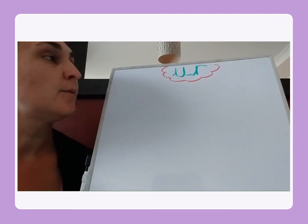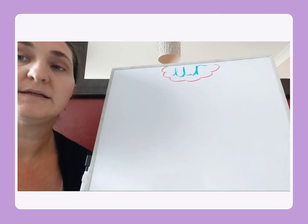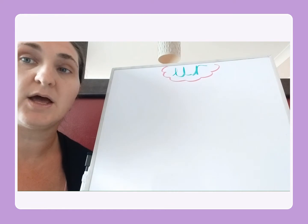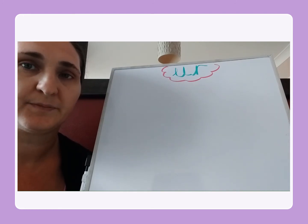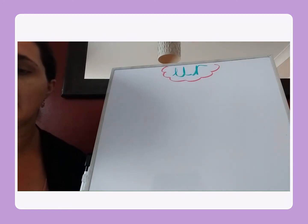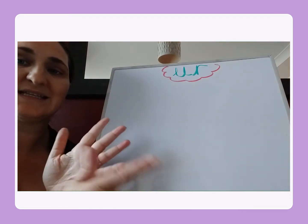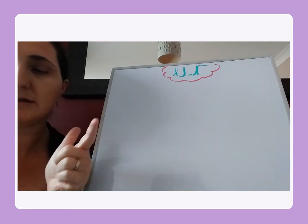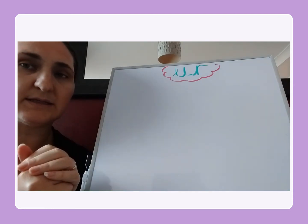Hello, we're going to write a sentence today with the digraph ur. The ur is made up of the u and r which come together to make the ur sound, like in fur, burn, urn, curl, hurt. The sentence we're going to write today is: I burnt my arm and it hurt. So that's seven words. Let's say that one more time: I burnt my arm and it hurt.